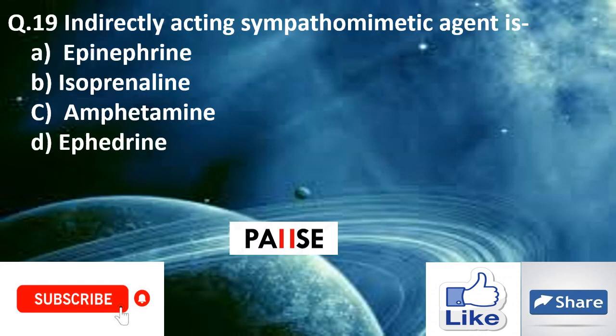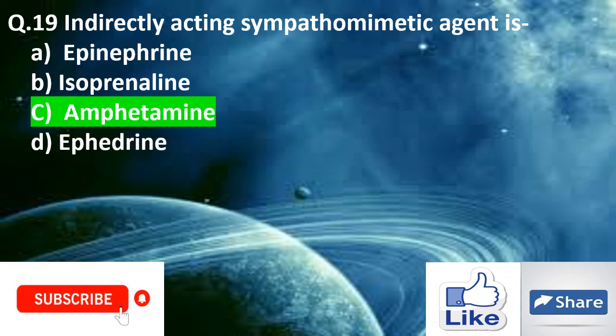Question nineteen: Indirectly acting sympathomimetic agent is — option A: epinephrine, option B: isoprenaline, option C: amphetamine, option D: ephedrine. The right answer is option C: amphetamine.